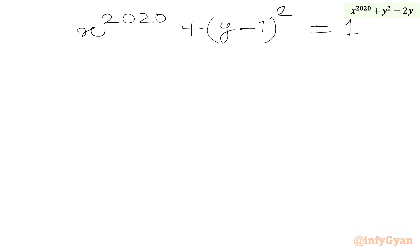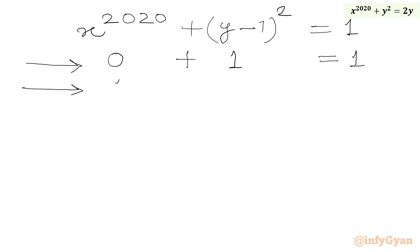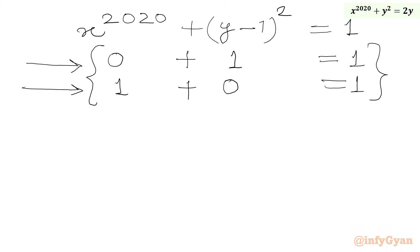Since both terms are non-negative and sum to 1, we have two cases. First case: x power 2020 equals 0 and (y minus 1) squared equals 1, giving a sum of 1. Second case: x power 2020 equals 1 and (y minus 1) squared equals 0, also giving RHS equal to 1.